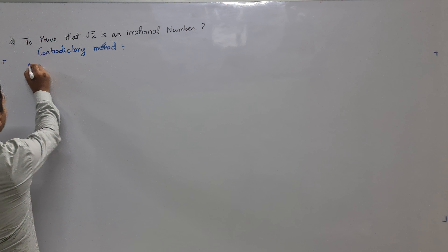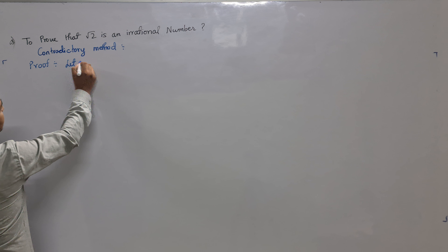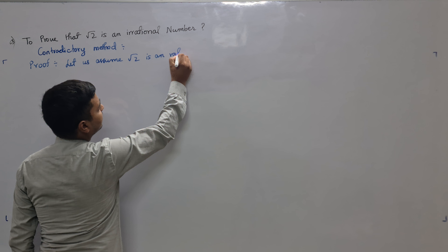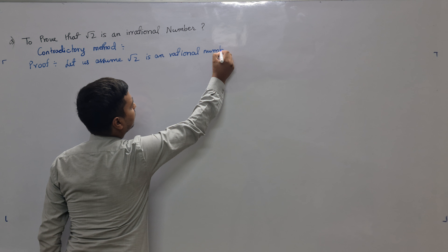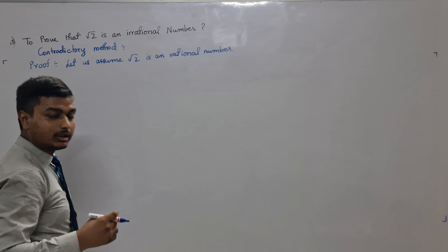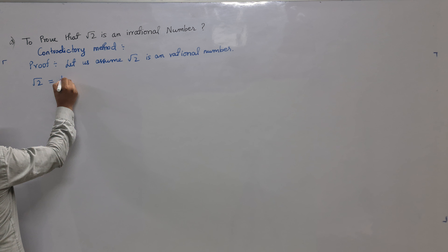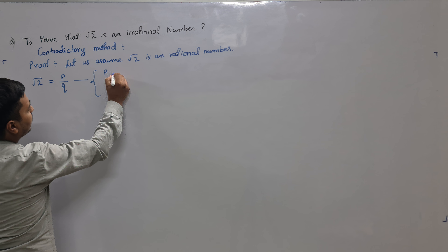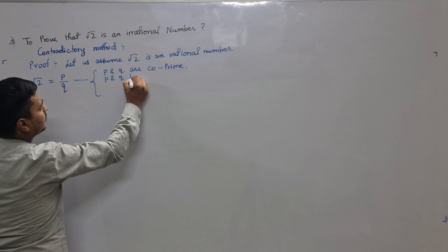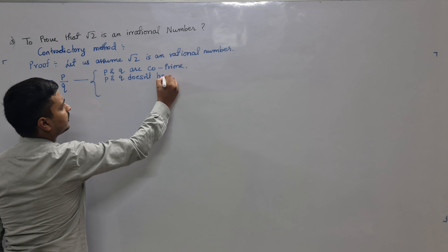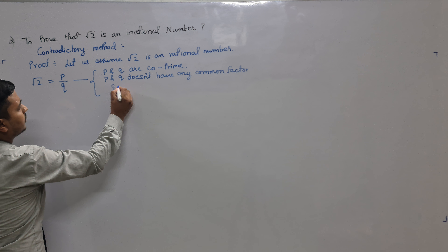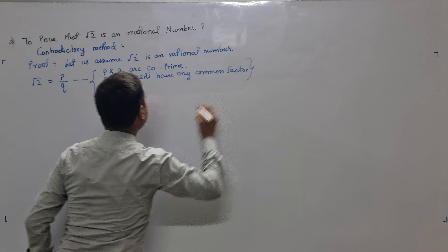First, we need to assume: let us assume root 2 is a rational number. Now, what do you mean by a rational number? Root 2 should be equal to p by q form, where p and q are co-prime — in simple language, p and q do not have any common factor.